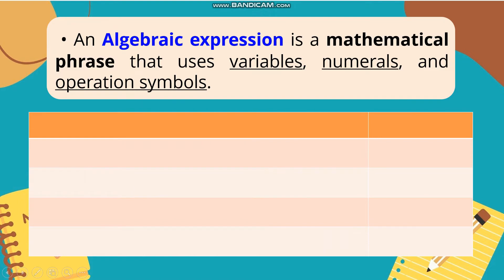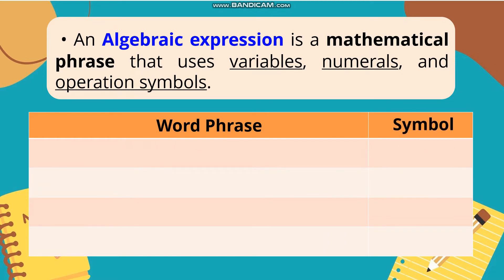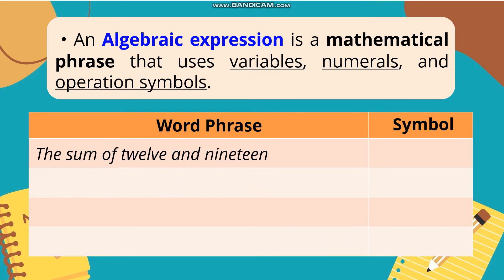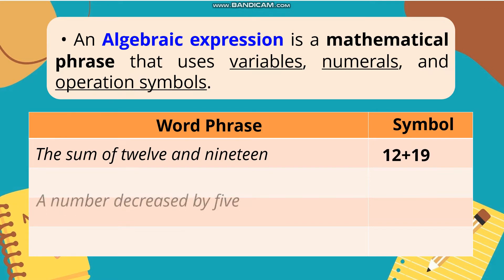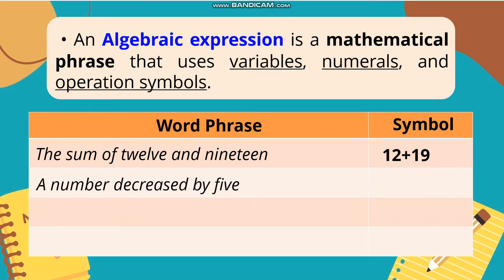Narito ang mga examples of algebraic expression, nakasulat sa word phrase and symbol. Number 1 — word phrase: the sum of 12 and 19. Symbol: 12 plus 19. Number 2 — word phrase: a number decreased by 5. Symbol: n minus 5.